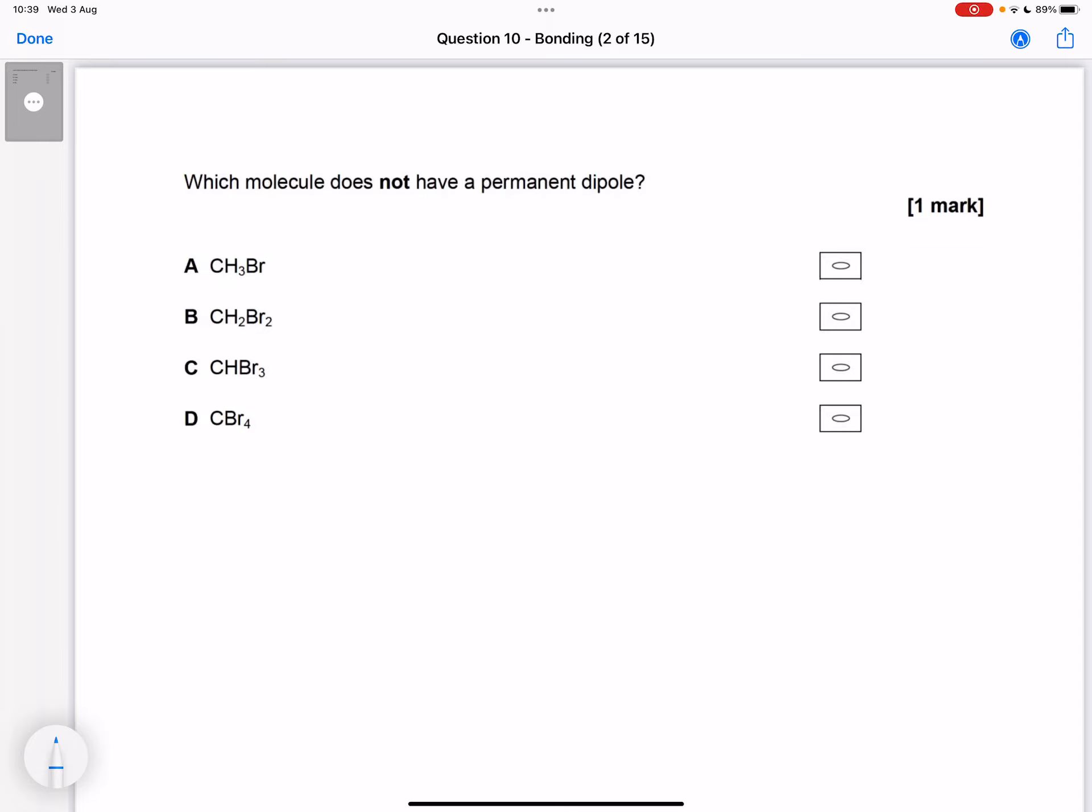Which molecule does not have a permanent dipole? We can see they've all got a carbon-bromine bond, so they've all got polar bonds, but one of them doesn't have a permanent dipole on the molecule.